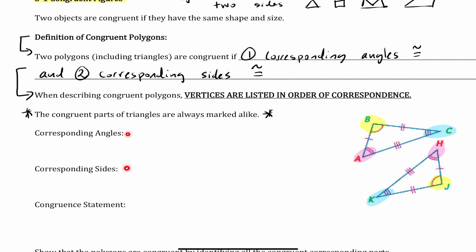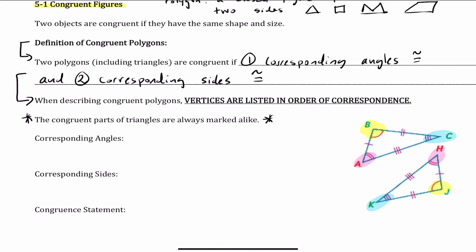If these two conditions are met, then we write a congruent statement. Starting with corresponding angles — I've already highlighted the angles. Comparing this triangle to that triangle, I notice that angle A has two arcs. Looking at the other triangle, I need to find the angle with the same number of arcs as angle A. Based on the number of arcs, angle A and angle A are congruent.